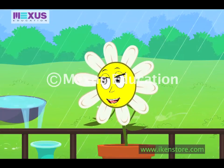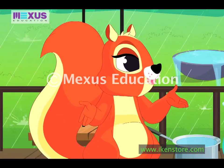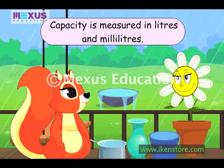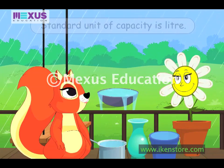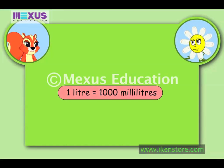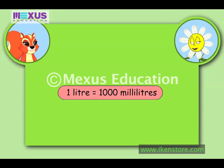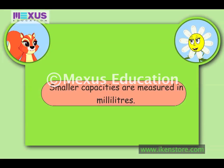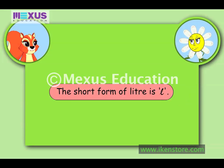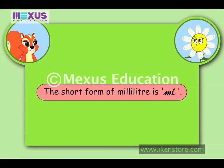Did you understand the concept of capacity, Amber? Oh yes, I understood it. Very good, Amber! But capacity is not only measured in cups. It is also measured in litres and millilitres. Litre is the standard unit of capacity. One litre of any liquid is the same as 1000 millilitres. Litre is the bigger unit, used to measure larger capacities. Millilitre is used to measure smaller capacities. Litre is usually written as L and millilitre is written as mL.